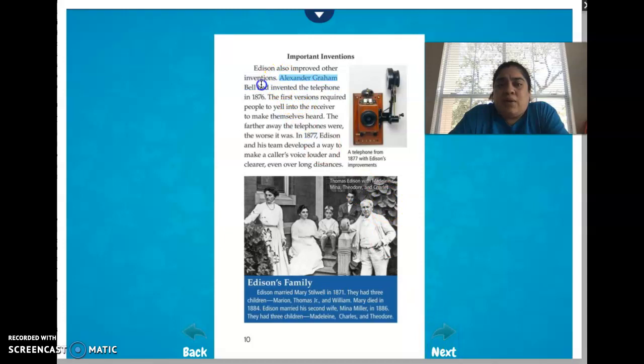Alexander Graham Bell invented the telephone in 1876 and in 1877 Edison found a way to improve the telephone. So Thomas Edison is moving us in the direction of having telephones that we had before cell phones became a thing. Edison was able to improve the telephone where people could talk through it and you could hear each other, you didn't have to yell through it.